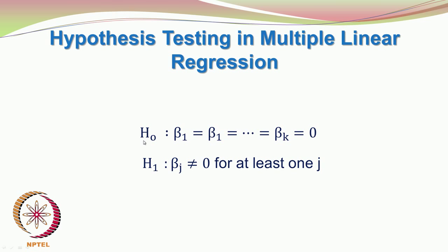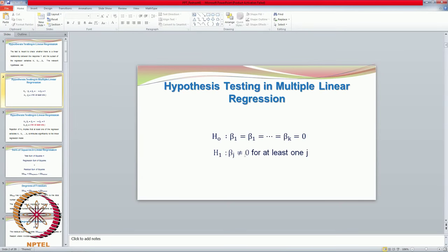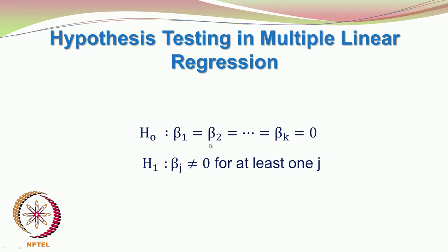As the slide indicates, the test is meant to check whether there is a linear relationship between the response y and the subset of regressor variables x1, x2, so on to xk. We carry out hypothesis testing in multiple linear regression. Our null hypothesis is β1 = β2 = ... = βk = 0. What it really means is that none of the regression coefficients are significantly different from 0.